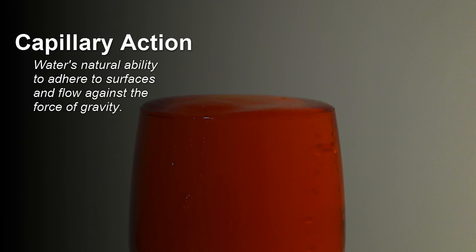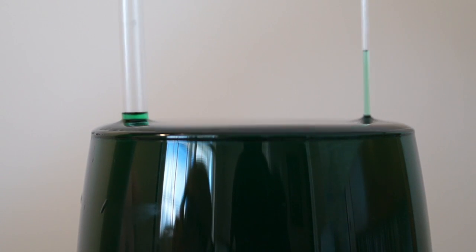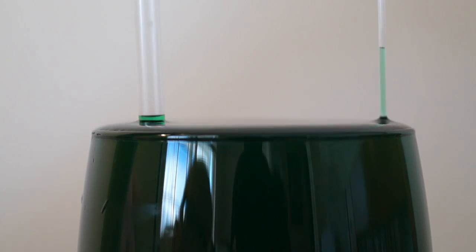Plants are able to obtain water through a process known as capillary action. This is water's natural ability to adhere to surfaces and flow against the force of gravity. Water will cling to other surfaces and actually pull itself up as seen by the meniscus in many containers. The narrower the container, the higher water will pull itself up.